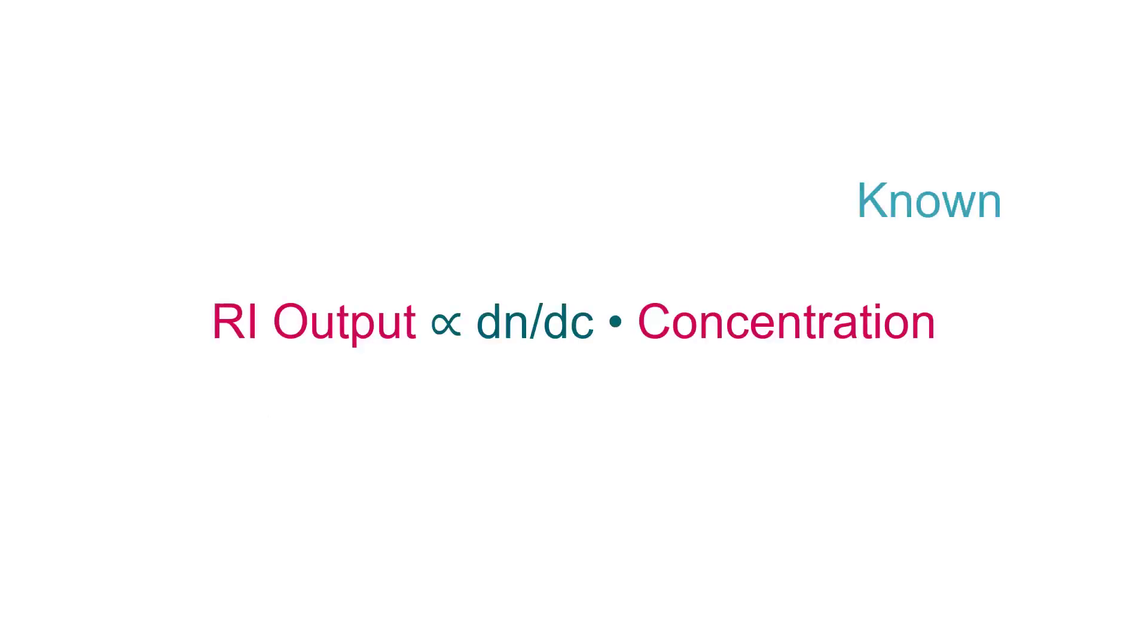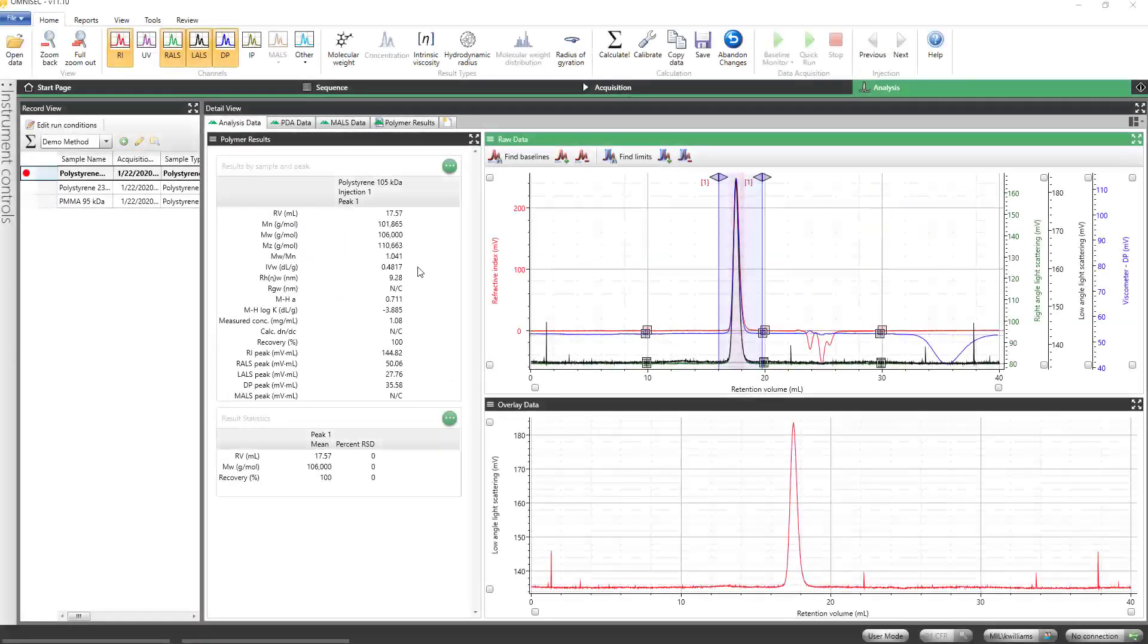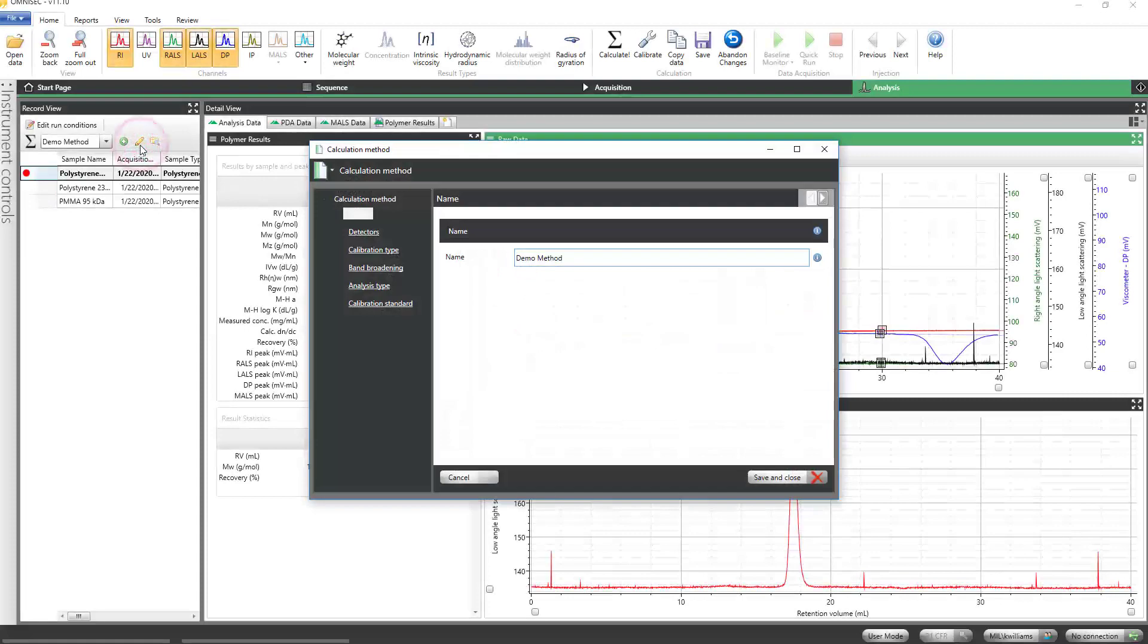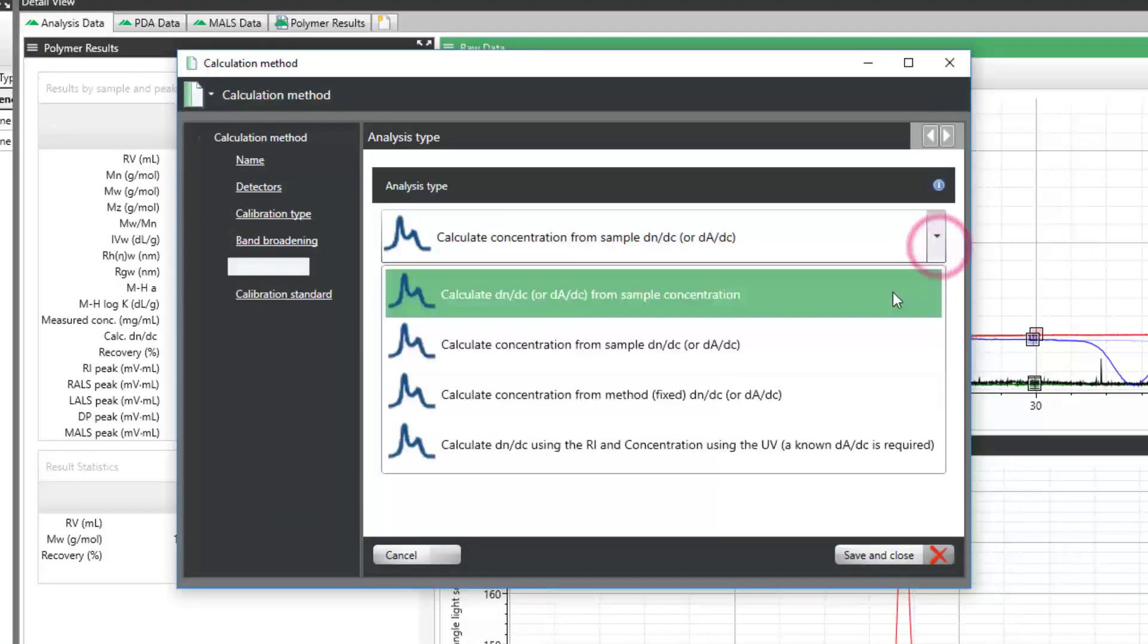If you know the exact concentration of your sample and are confident that your limits and baselines represent the entirety of your completely dissolved sample, the software can determine its DNDC value. To do this, open the Calculation Method window and select the Analysis Type page. Click the drop-down menu and select Calculate DNDC from Sample Concentration.